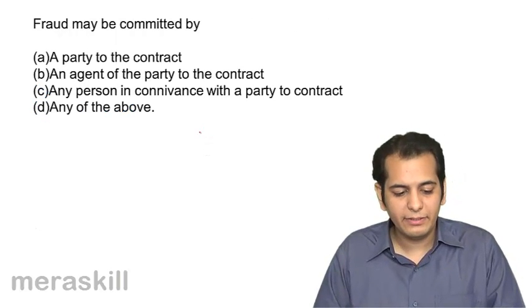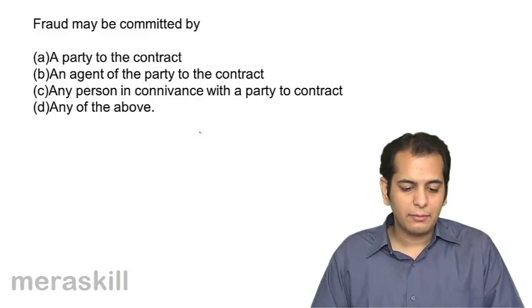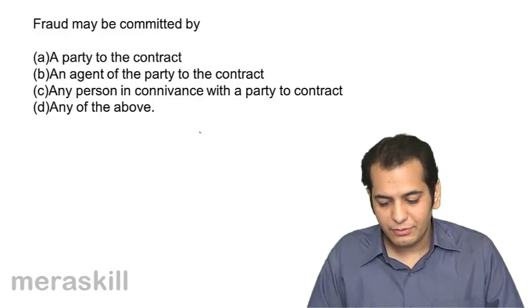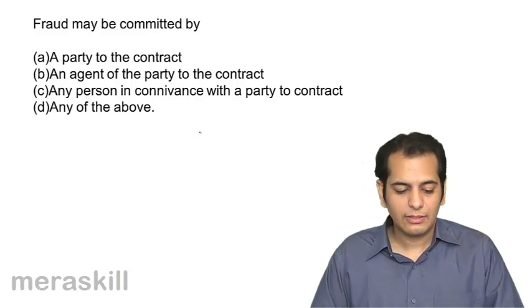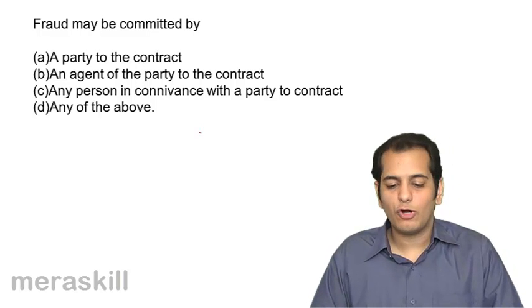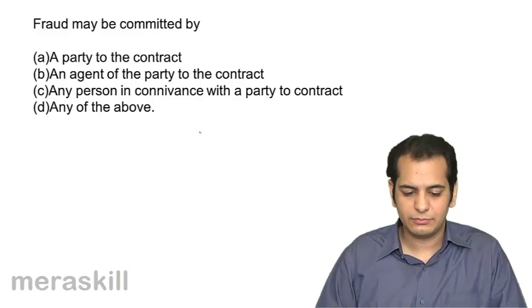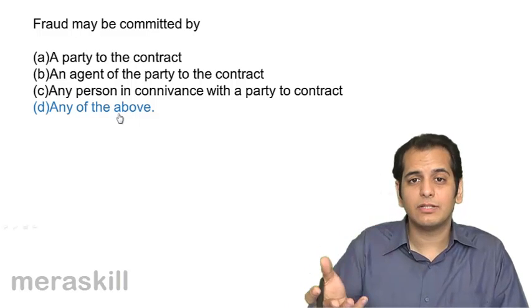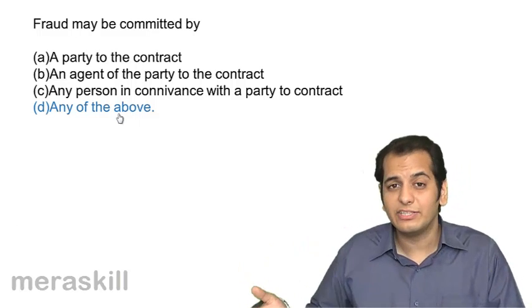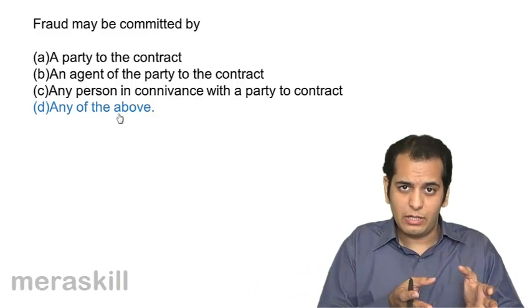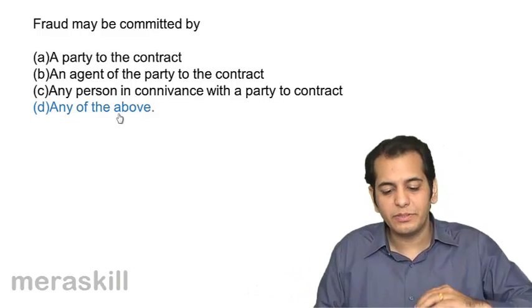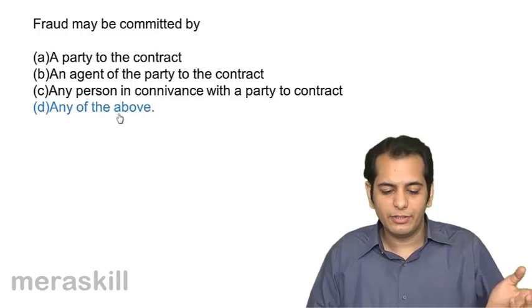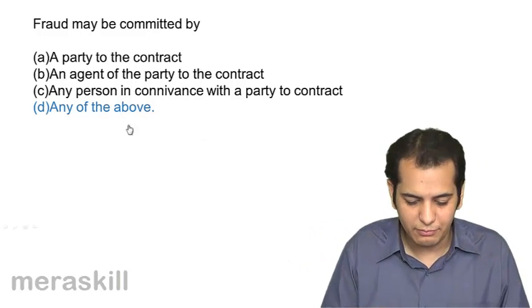Fraud may be committed by: A a party to the contract, B an agent of the party to the contract, C any person in connivance with a party to the contract, D any of the above. Fraud may be committed by any person. The party himself can commit fraud, or his agent may commit fraud on his behalf, or any other person with his knowledge — connivance means knowledge. So any person can commit fraud. The answer is D — any of the above.